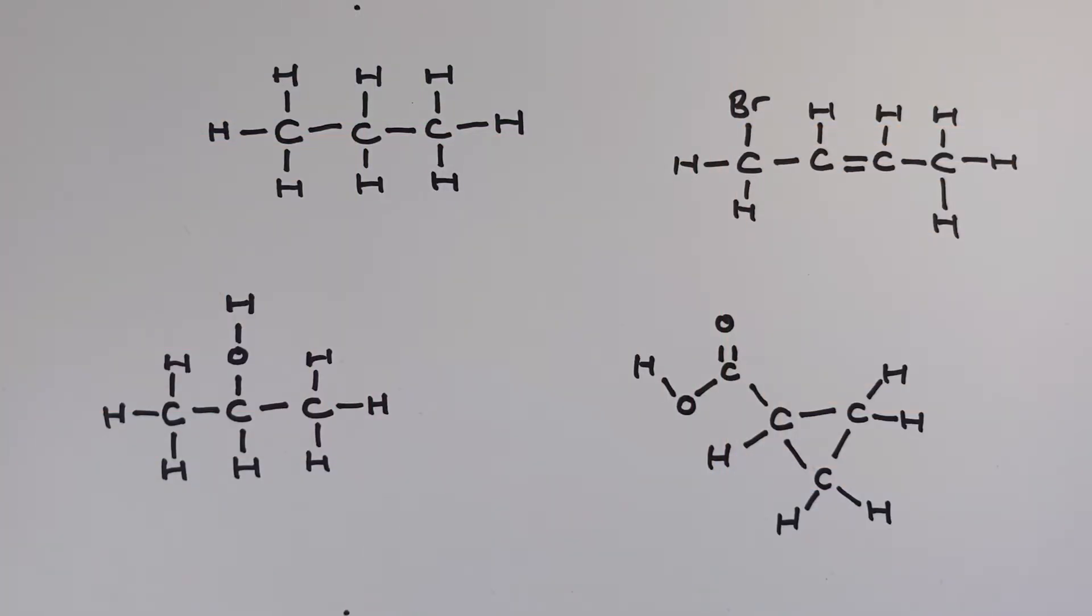So we're going to start off here with a first example using propane. Propane is a three carbon aliphatic structure and I'm numbering the carbons out here so you can see exactly where I'm going and I'll do this on the skeletal too.